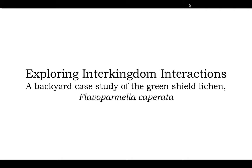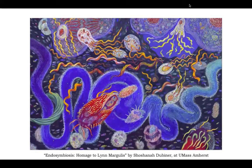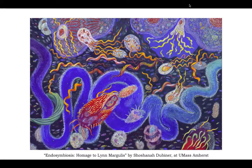So, exploring interkingdom interactions. I'm going to do this by using a backyard case study of the green shield lichen Flavoparmelia caporata — and I literally mean my own backyard. I want to start with an image which is an homage to Lynn Margulis, because she, in Microcosmos and other works, put forth this idea that everything we look at around us — every living thing that we perceive as an individual — is actually a complex microbial consortium. Today we would likely refer to that concept as a holobiont. I'm prefacing my entire talk with this idea because lichens are a wonderful case study to examine the concept of a holobiont.